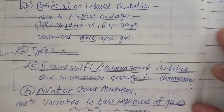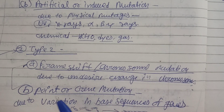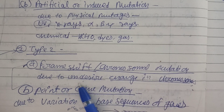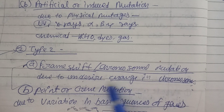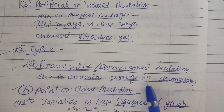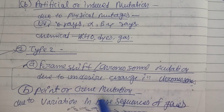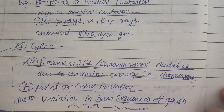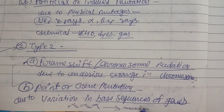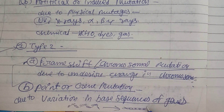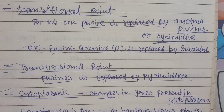Type two classification of mutation includes frame-shift or chromosomal mutation and point or gene mutation. Frame-shift or chromosomal mutation occurs due to undesired changes in chromosomes. Point or gene mutation occurs due to variation in the base sequence of genes — if any change occurs in the base sequence, it is called a point or gene mutation.